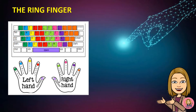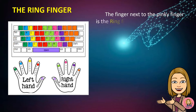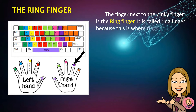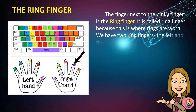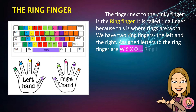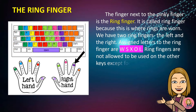The ring finger: the finger next to the pinkie finger is the ring finger. It is called the ring finger because this is where rings are worn. We have two ring fingers, the left and the right. The letters assigned to the ring finger are W,